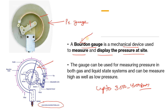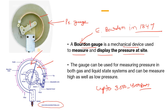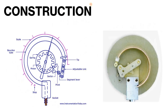Why is it called 'Bourdon'? This Bourdon tube pressure gauge was invented — developed — by E. Bourdon, a scientist, in 1849. That's why we call it the Bourdon pressure gauge. This tube is also known as the Bourdon tube or hollow tube, and we refer to it as the Bourdon tube.